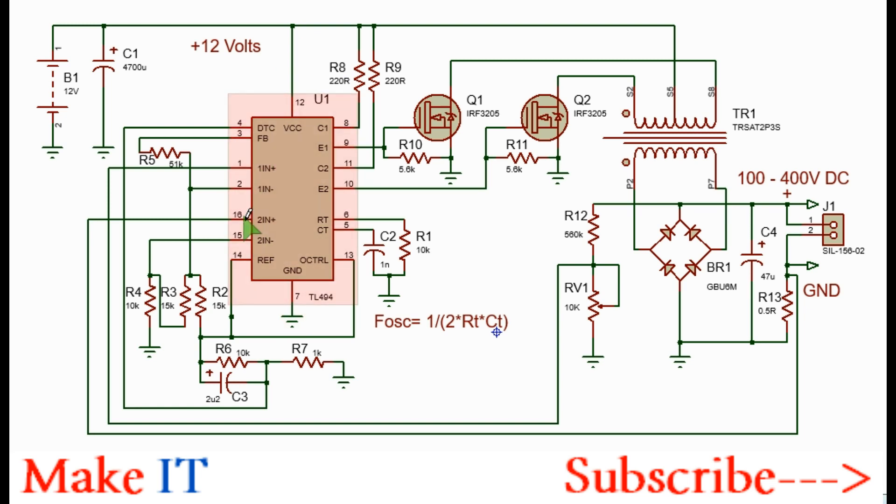For the outputs, I'll be using the open emitters to drive the power MOSFETs. Pull up the collectors using 220 ohms resistors which are rated for at least 2 watts.